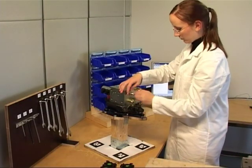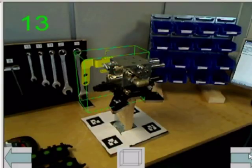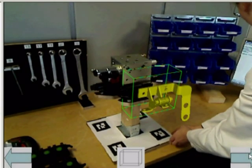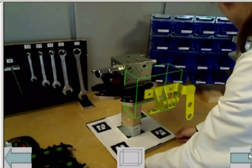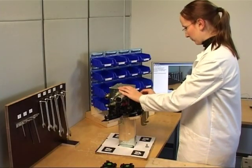Augmented reality software computes the transformation matrix that describes the position, rotation, and size of an object. The virtual object is therefore located in relation to that marker. Thus, the user experiences video see-through augmented reality, which means they are viewing the real world through real-time video with virtual models.